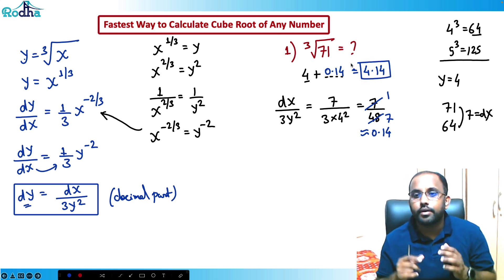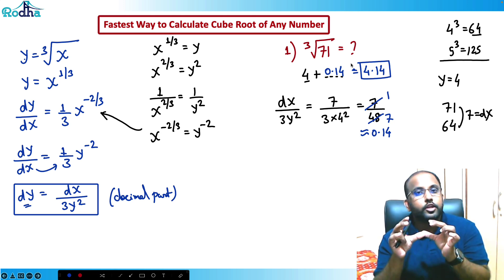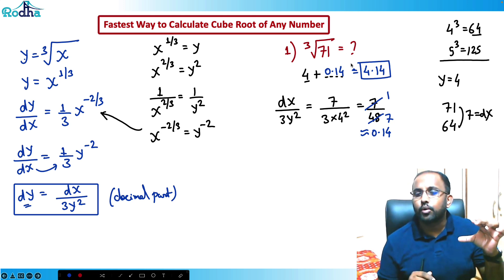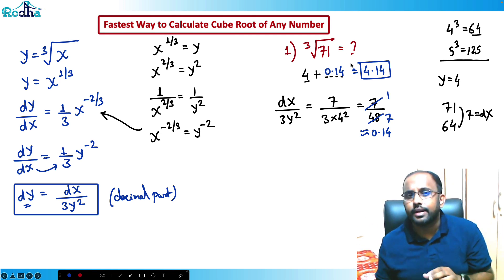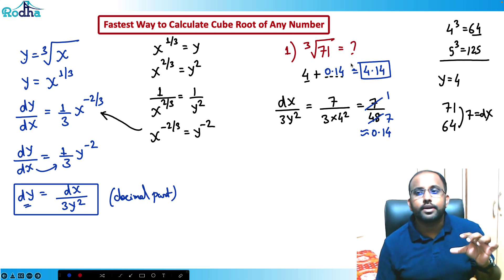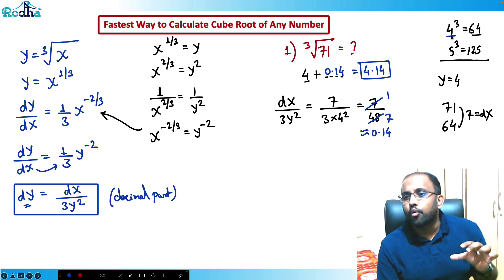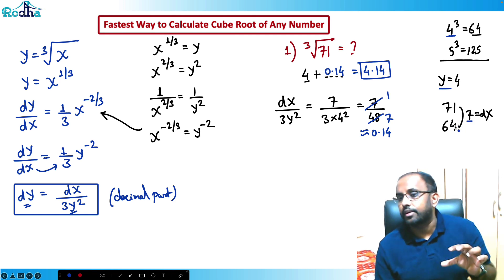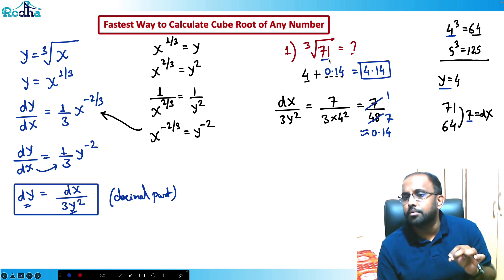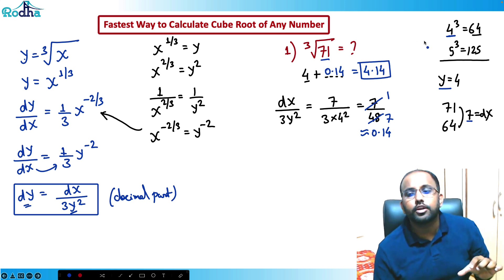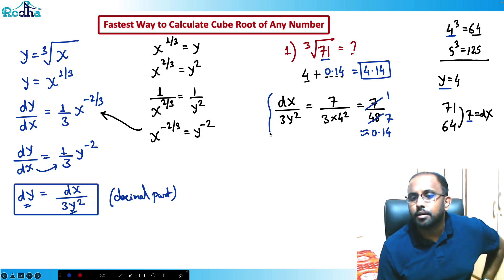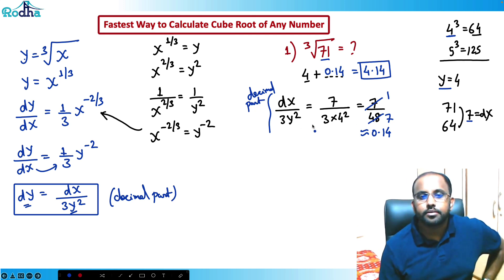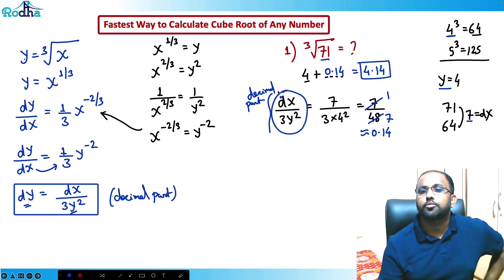So the method is very simple: take the nearest perfect cube, that is y = 4 (since 4³ = 64). dx is the difference between the number and the nearest perfect cube, which is 7. The decimal part is always dx / (3y²). Just remember this formula — that's it.